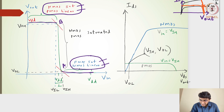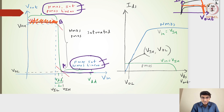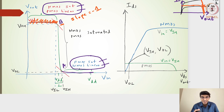The intersection of PMOS linear and NMOS saturation gives points up to point B. To find point B, I equate the NMOS saturation current to the PMOS linear current. Additionally, the slope dVOUT/dVIN equals minus 1 at that point. Using both equations — equal currents and slope of minus 1 — I can solve for VOUT and VIN at point B.